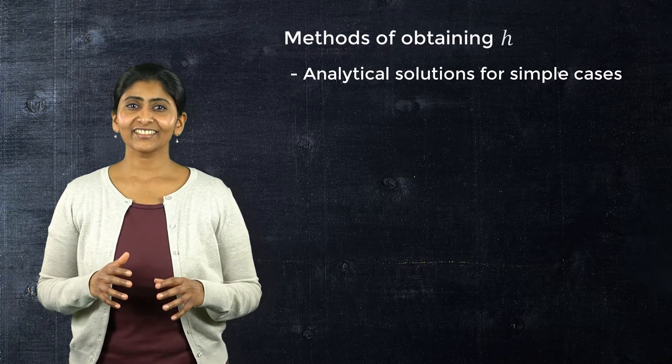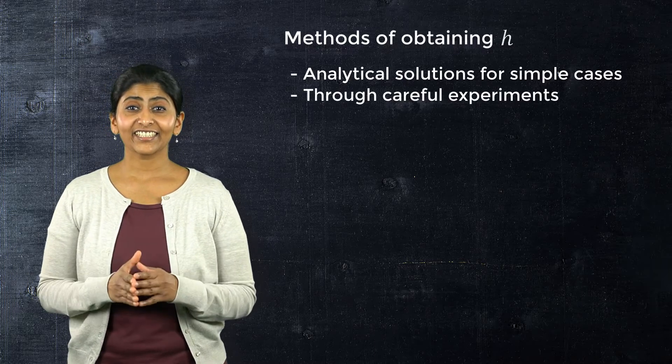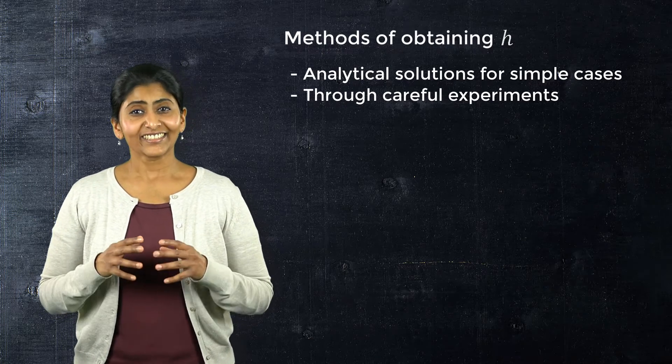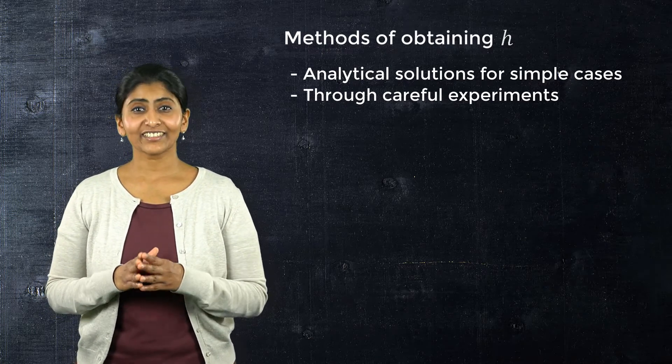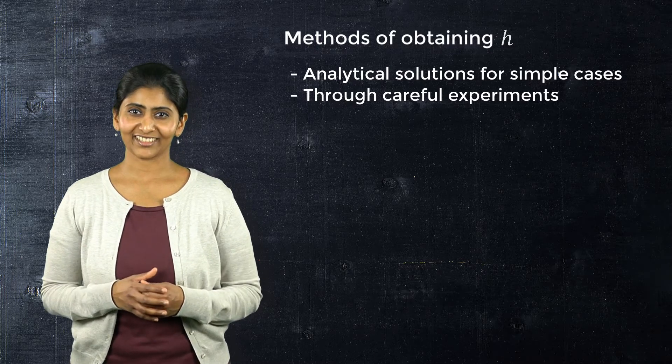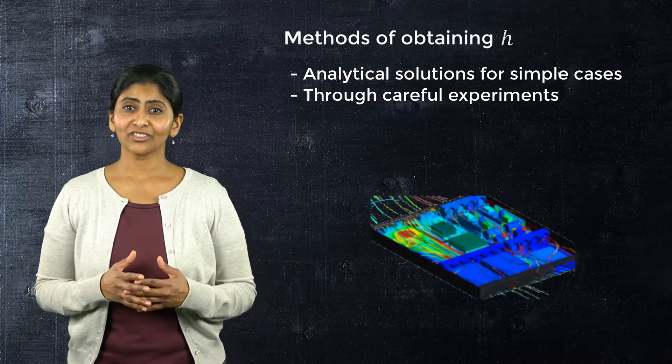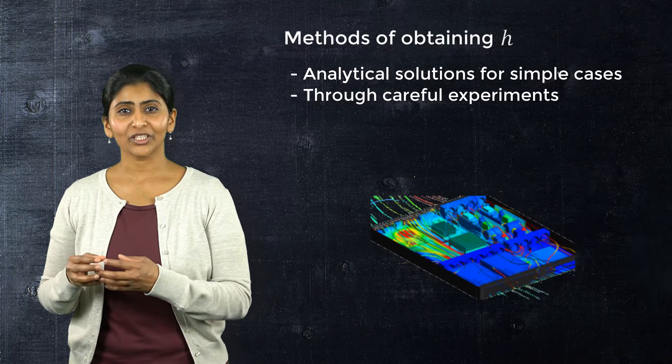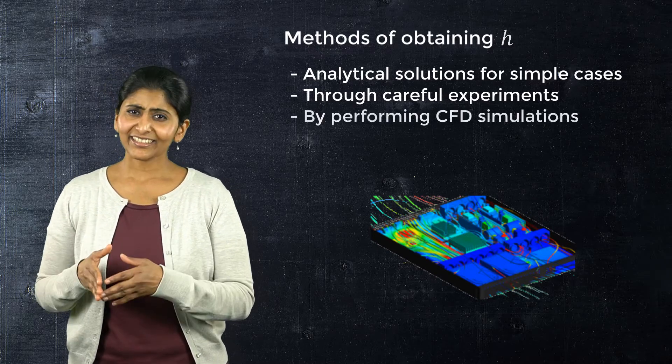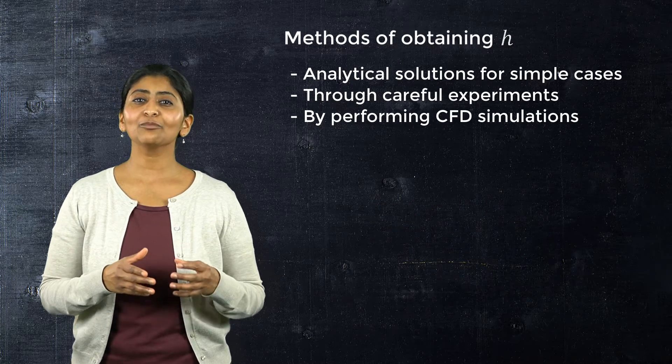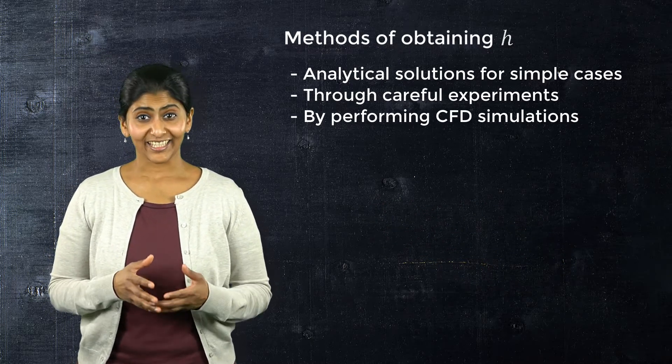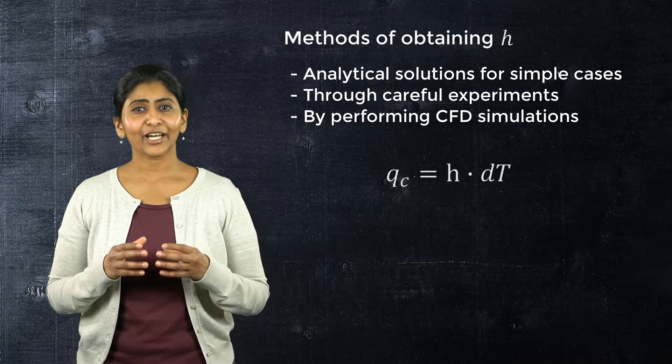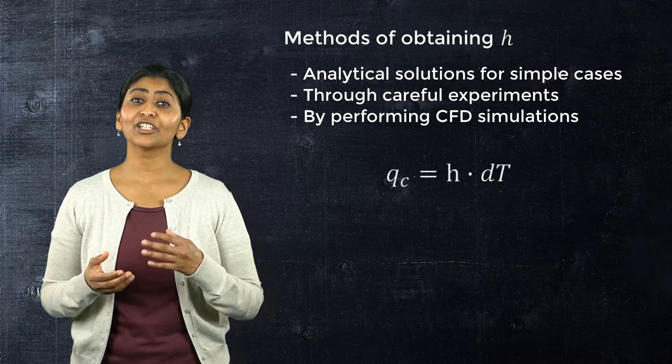But in most of the cases, data for film coefficient is generated using equations and careful experimentation. This results in empirical relations being used for the film coefficients. A CFD-based solver directly solves the heat transfer simulation without requiring a film coefficient to be defined, and this is another way of calculating film coefficient values. Hence, the product H times dT can be thought of as a convective boundary condition which models the fluid indirectly.